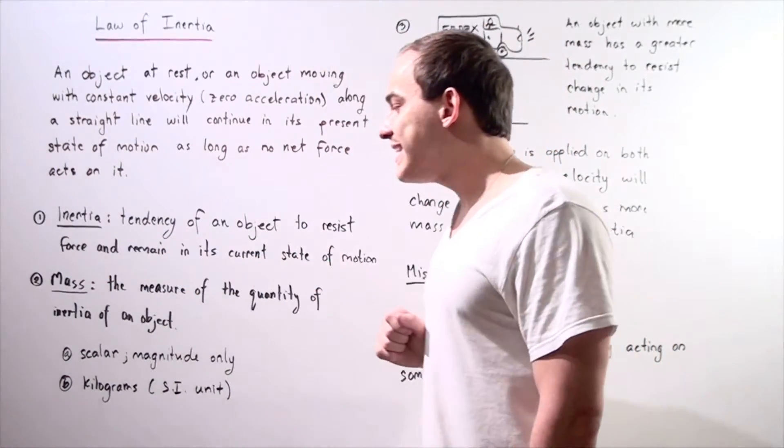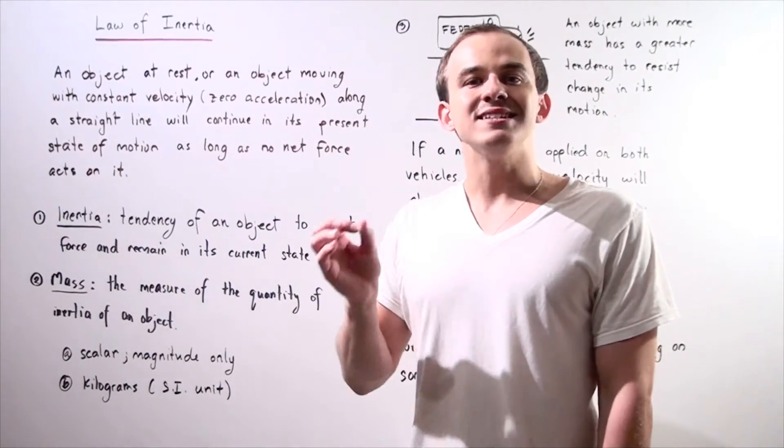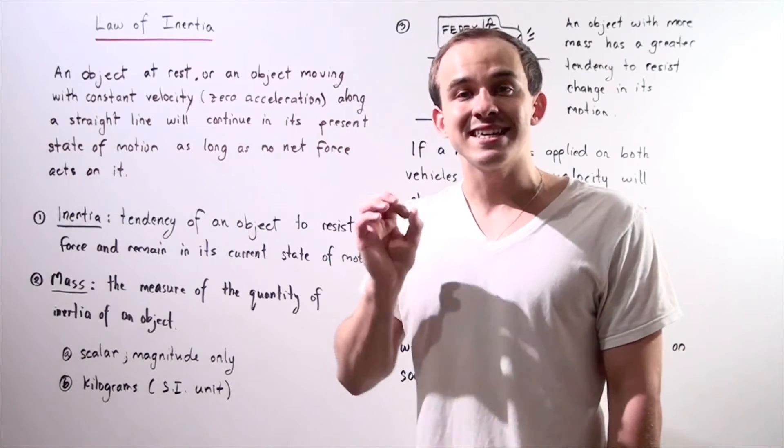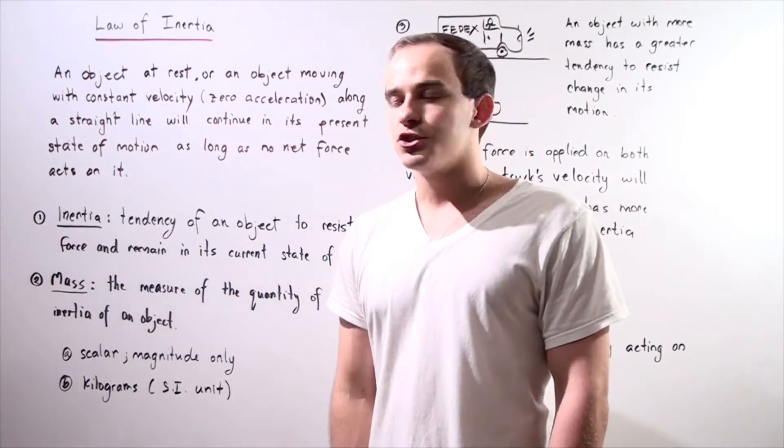Mass is given by kilograms. The SI unit of mass is kilograms. Mass is a scalar, and that means it only has magnitude and no direction. Let's look at the following example.